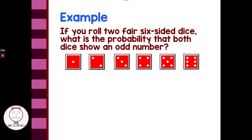For example, if you roll two fair six-sided dice, what is the probability that both dice will show an odd number? Let's first talk about the probability of the first event — the first die. We could be rolling one die and then picking it up and rolling it again, or we could just be rolling two dice at one time. The probability part works the same.